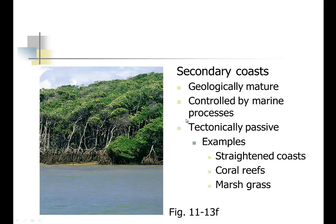Secondary coasts are not so much geologic — they're more marine controlled and tectonically passive. Examples include coasts that have been straightened with no more headlands or bays, coral reefs forming offshore where the water is relatively clear, salt marshes with marsh grasses, and mangrove trees that spread out, getting air for their roots, holding sediment, and making the land grow into the water.